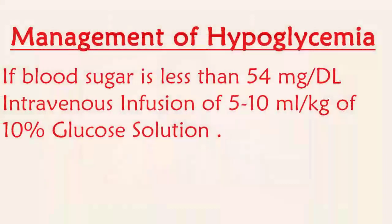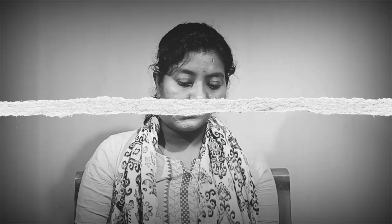If the baby is admitted with hypoglycemia, meaning low blood sugar level, hypoglycemia treatment is given. Generally, intravenous infusion of 5–10 ml per kg of 10% dextrose is administered. Hypoglycemia is considered when blood glucose level is below 54 mg per dL.